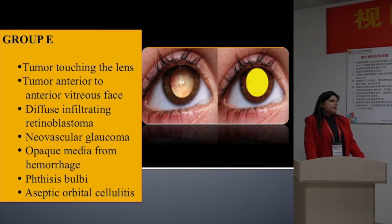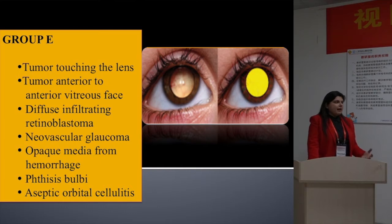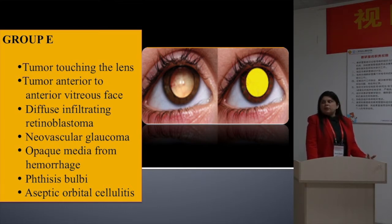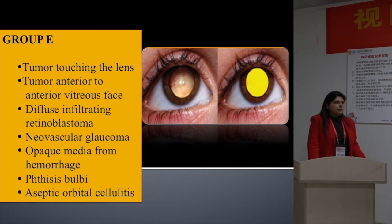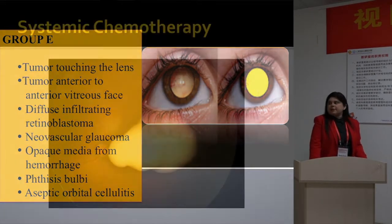For Group E, we do not use systemic chemotherapy unless it's a bilateral advanced disease and we're trying to save at least one eye. Unilateral Group B cases we treat only by upfront enucleation. These are the Group B cases in which, if any of these features are present, we do not use systemic chemotherapy at our center.